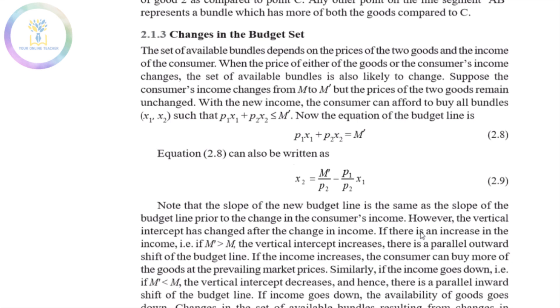What changes are we going to do in this video? What changes are we going to do in the budget line? If there is a change in the price of good 1 (P1), how is the budget line going to change?